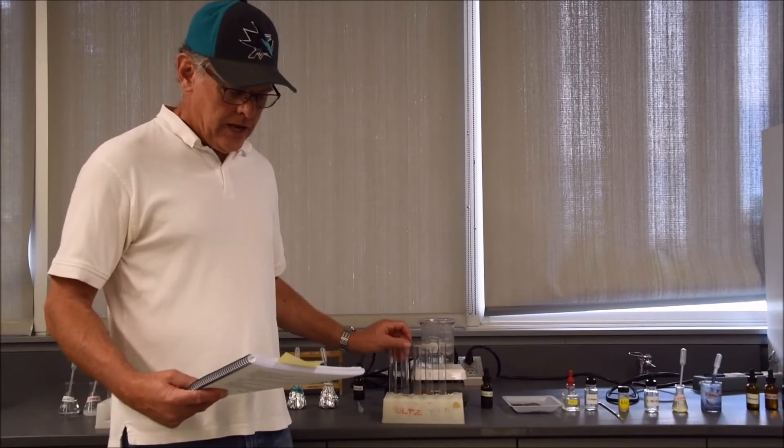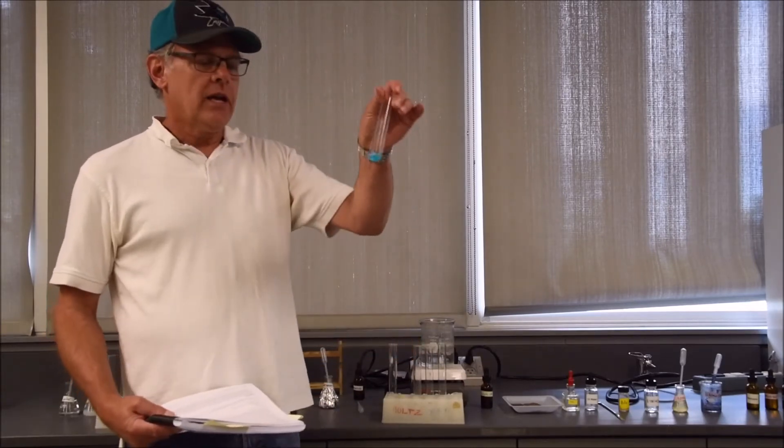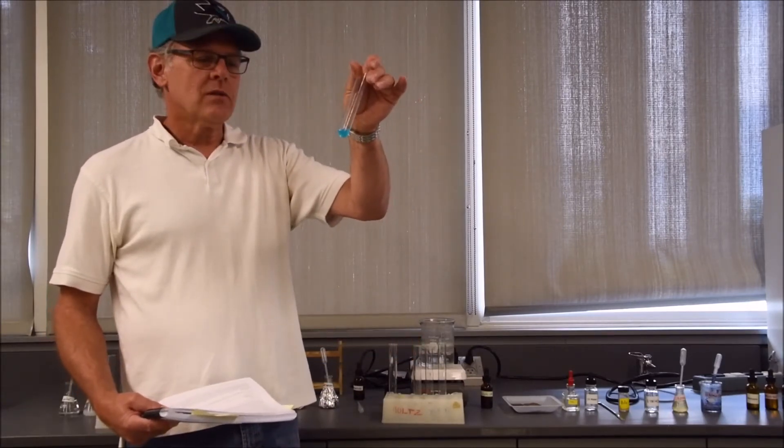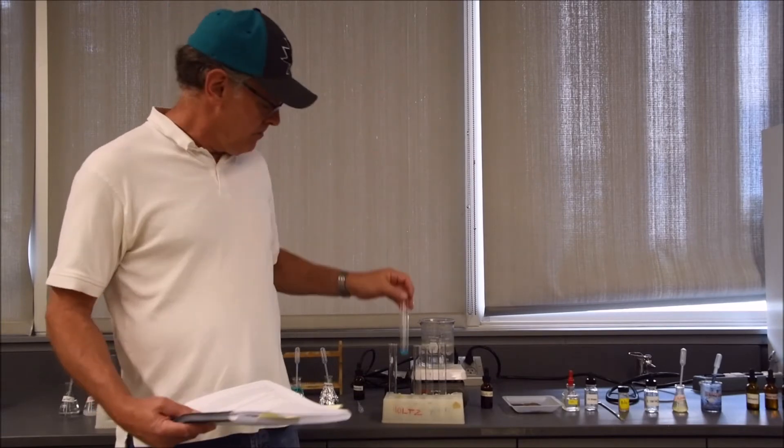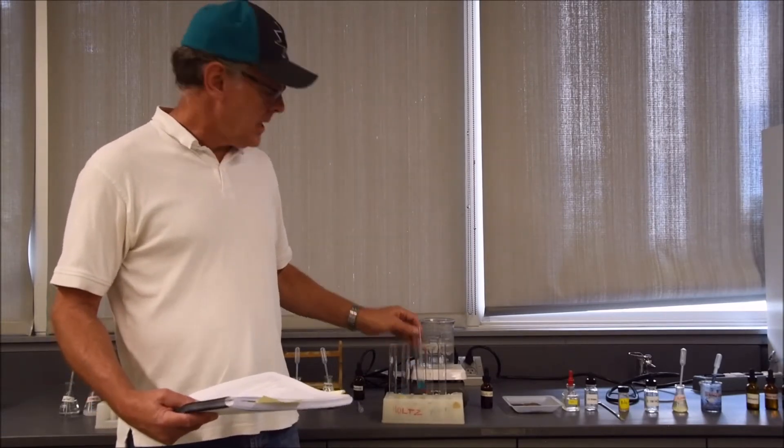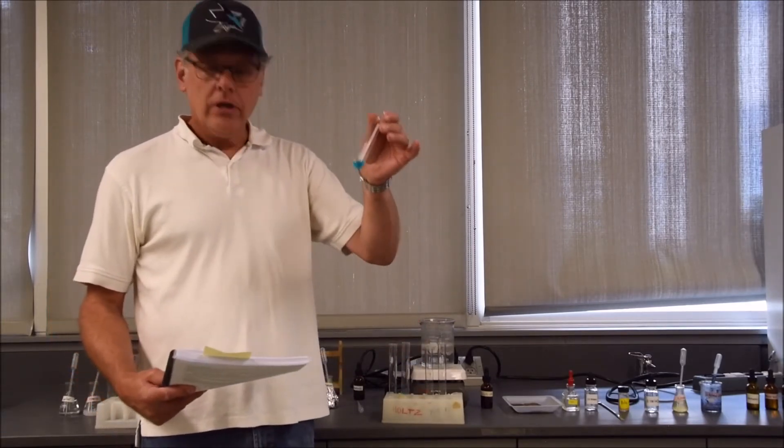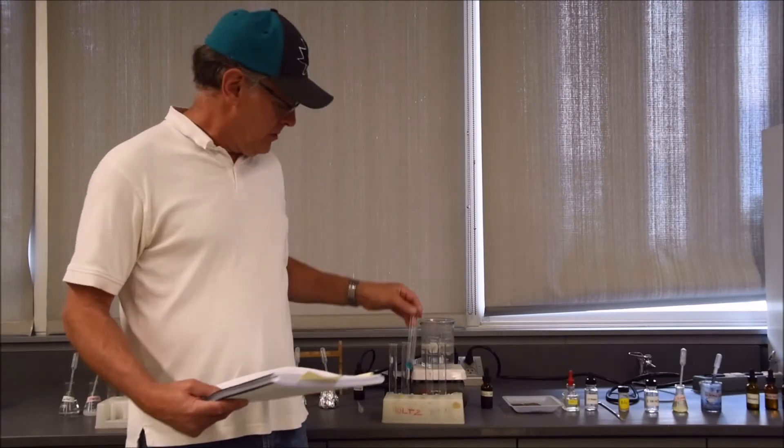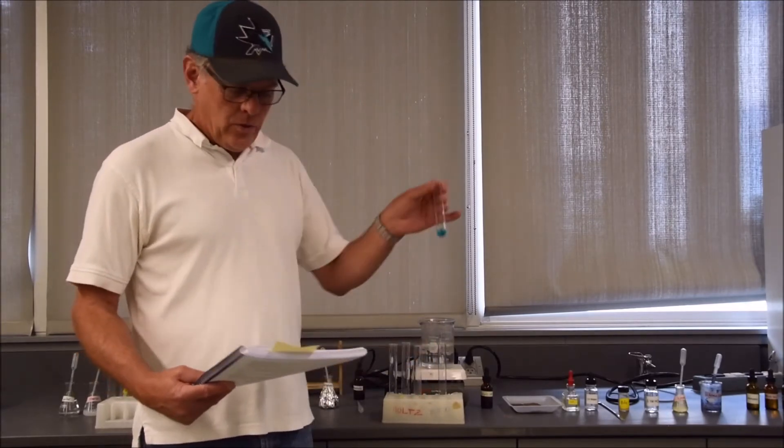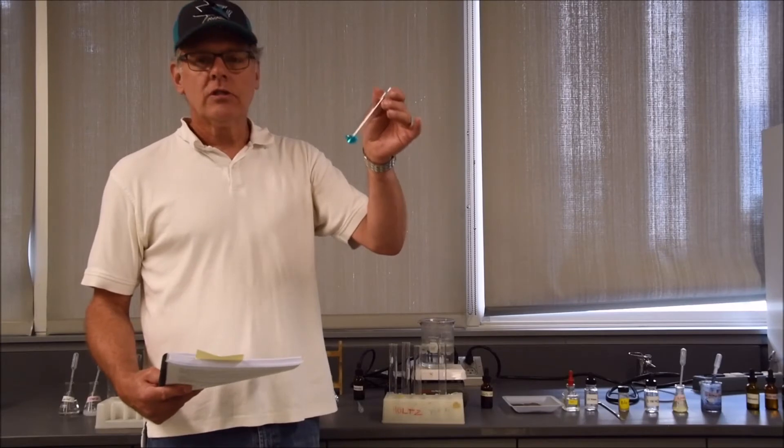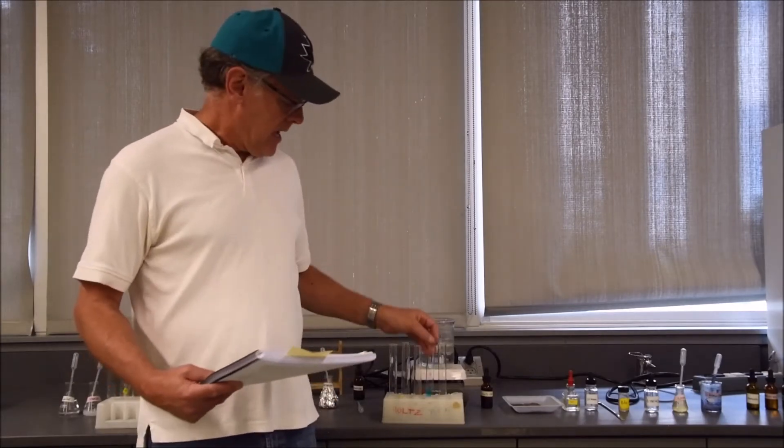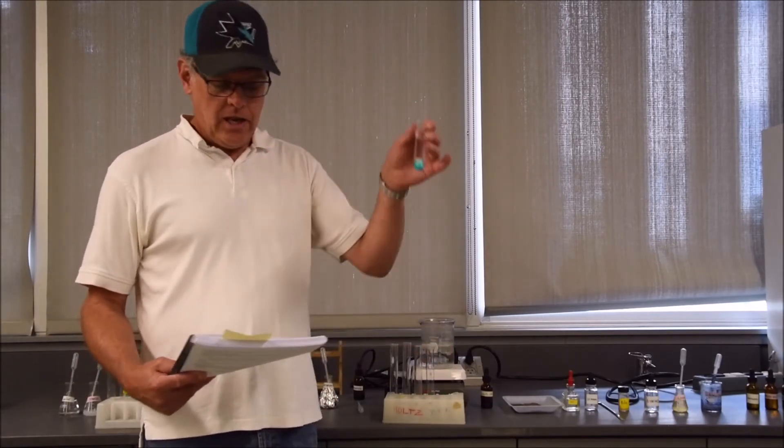Tube number two has starch, again kind of a blue color, although this time it's a little bit creamy blue. The starch has a little bit of color to it. Glucose is number three, also blue. Number four is onion juice with the Benedict's, and number five is a potato slice.